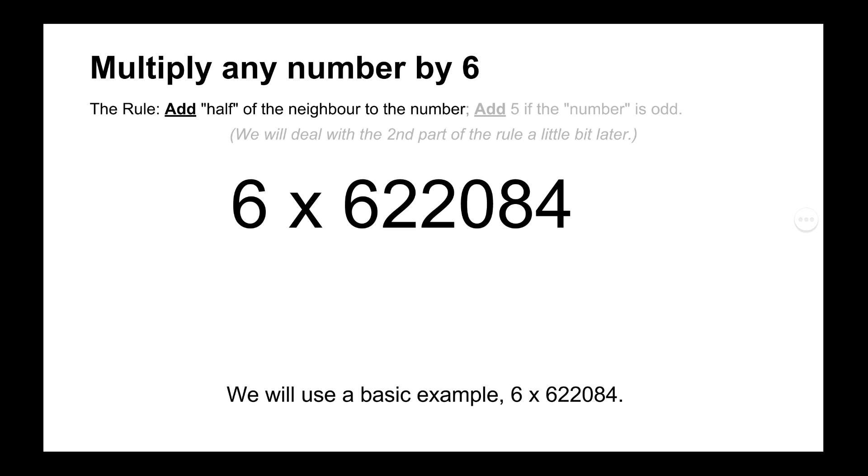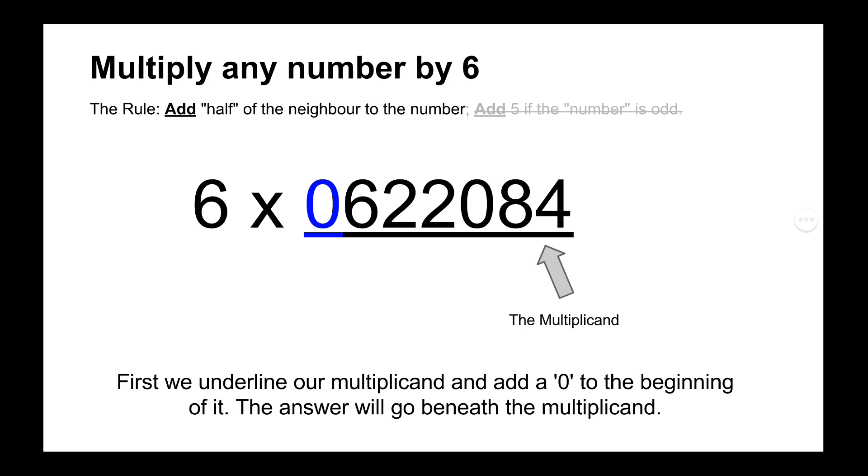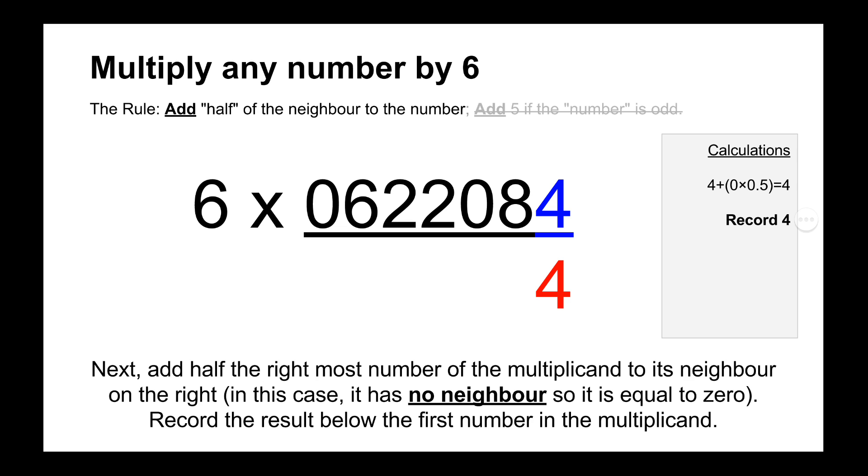So we'll start off with this simple example, which is 6 times 622,084. So like we do with all of our multiplications in the Trachtenberg system, is to add a zero to the beginning of the multiplicand and underline it. So the first digit on the right is 4 and it doesn't have a neighbour. If we consider that its neighbour is 0, then half the 0 would still be 0. So we do 0 plus 4. And then we record the 4 as shown in red at the bottom.